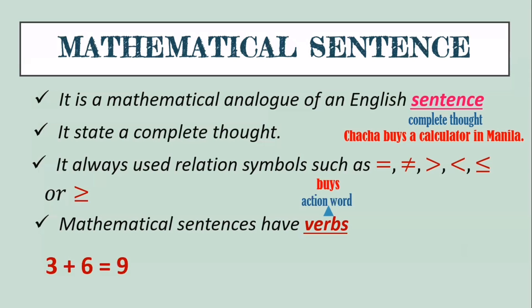If we just say 'three plus six,' that is incomplete — we don't know what to do with it. But with the equal sign, we know to add three and six. The verb here is the equal sign. More examples: '5x = 45' is a mathematical sentence; 'x + y = 3' is a mathematical sentence; 'x − 7 > 2' is also a mathematical sentence. The clue is: if you see a relation symbol — equal, not equal, greater than, less than — it is a mathematical sentence. If you only see '5x,' 'x + y,' 'x − 7,' or '45' with no relation symbol, those are expressions.